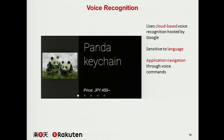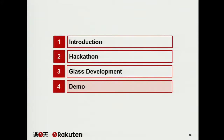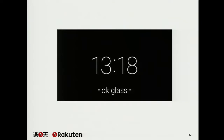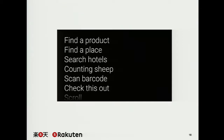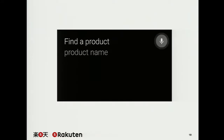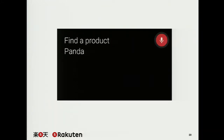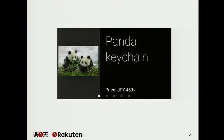We weren't able to connect the glass device to the projector, but we can simulate it so you'll know what our app looks like. When you open the glass device, you'll be shown this screen. You start things by saying 'Okay Glass,' and it shows you a menu. Our application is launched if you say 'find a product.' From here, you can just say what product you want to search for — say 'panda' — and you'll see Rakuten Panda products that you'd like to buy. And that's all for us. If you want to try some applications or web services from Rakuten, check out web services for Rakuten online. Thank you.